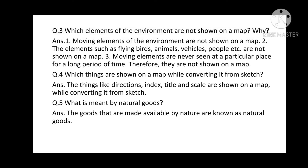Question number 3: Which elements of the environment are not shown on a map? Why? Answer: Moving elements of the environment are not shown on a map. Elements such as flying birds, animals, vehicles, people, etc. are not shown on a map. Moving elements are never seen at a particular place for a long period of time. Therefore, they are not shown on a map.